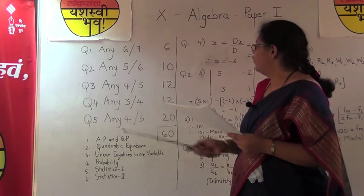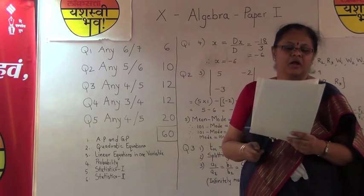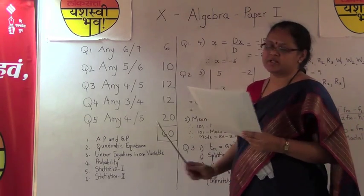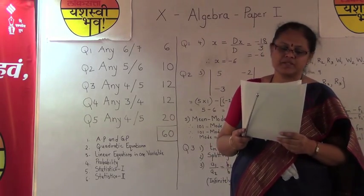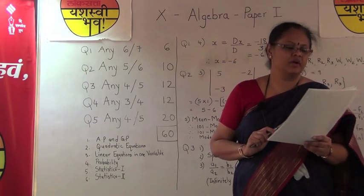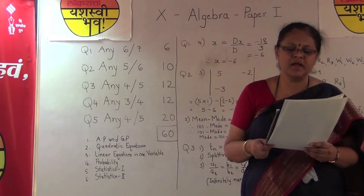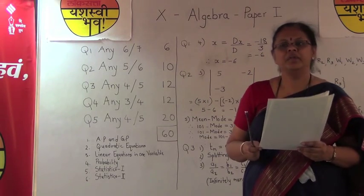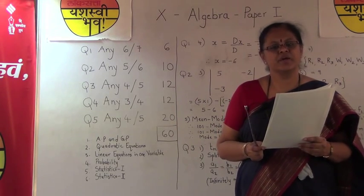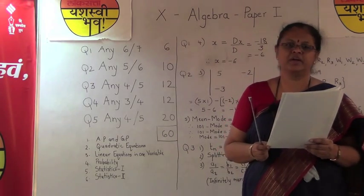Now let us come to question number 2, where you have to attempt 5 sums out of 6, each carrying 2 marks. The questions will be related to all the topics, so you have to revise all the topics. The second question is on chapter 2, quadratic equations, where one root of the equation x² − 11x + k = 0 is 9, and you have to find the value of k. Since the root satisfies the equation, simply substitute 9 in place of x and find the value of k.